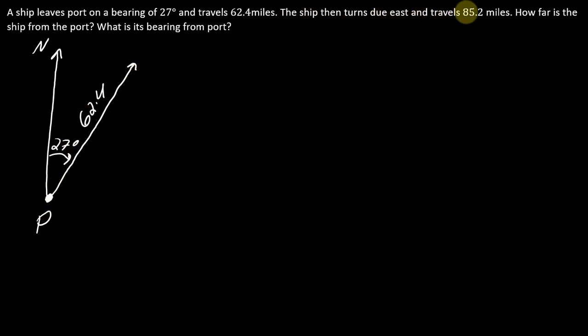Then the ship turns due east and travels 85.2 miles. So what do you think that means? Well, that means I'm here, and I turn east, so this way, and I go 85.2 miles. And so now the question is, how far is the ship from the port? So I'm looking for this distance here, so I'll call this vector d.